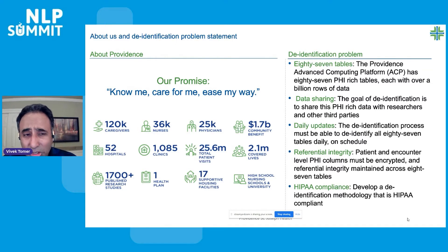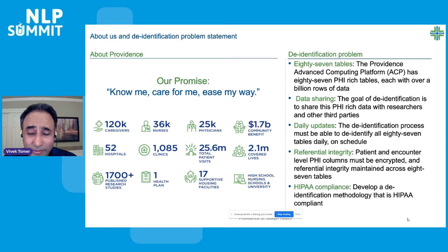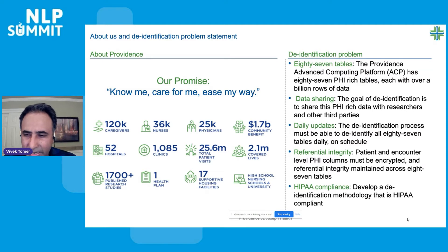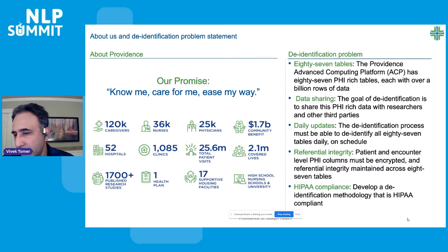The goal and problem statement was to de-identify 87 tables so that we can share the data, with daily updates. Every day we receive large amounts of data, and we needed a process that updates the notes and other data daily. Additionally, these 87 large tables have patient-level details that flow from one table to another. Over 40 different patient-specific fields have referential integrity that needs to be maintained — and that was another big challenge.